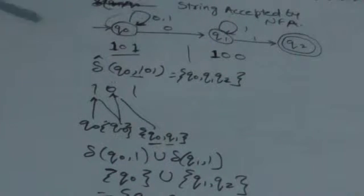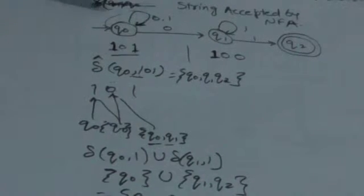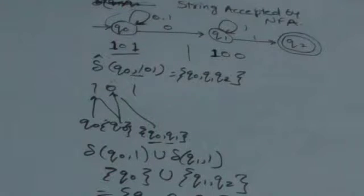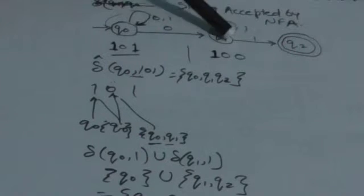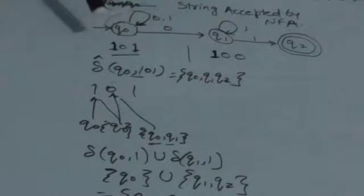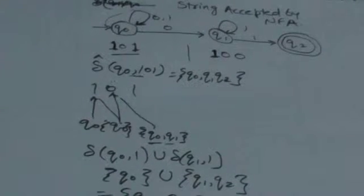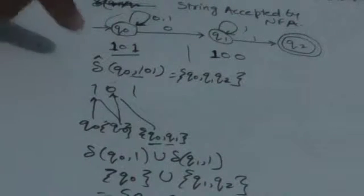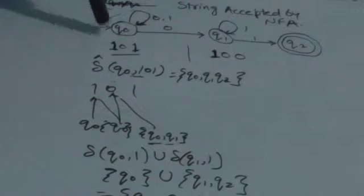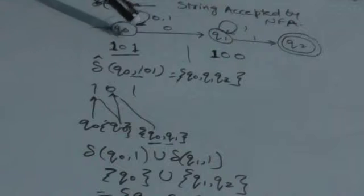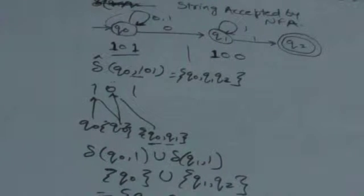Here we are provided with this NFA whose initial state is Q0 and final state is Q2. Now we have two strings, 101 and 100. We have to check whether these strings are accepted or not. First of all, we will apply the string to the initial state — first we test 101.